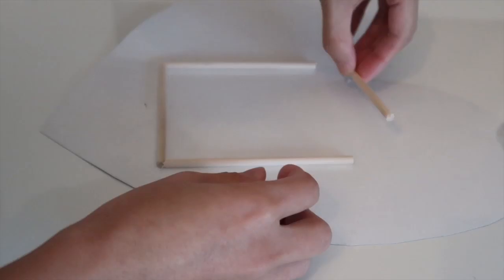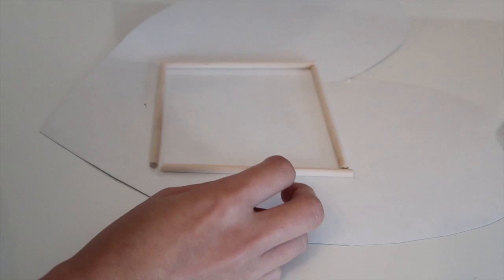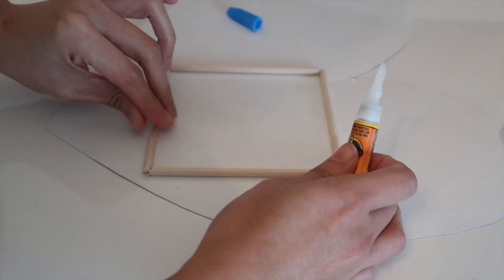This is going to be the base of the display. I'm going to connect them like this to form a square. You can use super glue or hot glue. I ended up using hot glue later on.